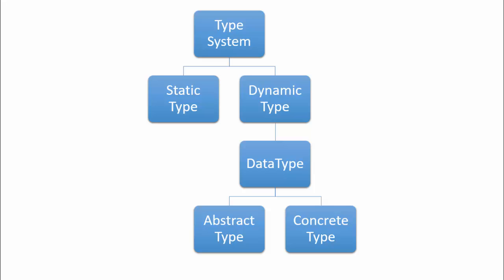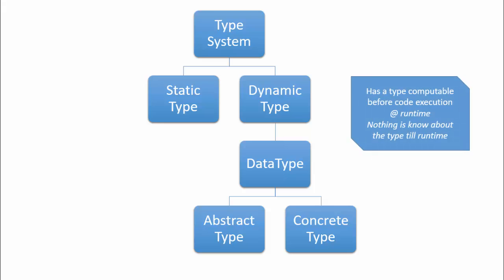So we have type systems. There are two main type systems: static type and dynamic type. There can also be nominal, structural, weakly, or strongly typed, but every programming language can be based under static type or dynamic type. Usually a dynamic type programming language like Julia is polymorphic, meaning it operates on different types. When you say static type, it means the type is computable before code execution. For dynamic type, nothing is known about the type until runtime.